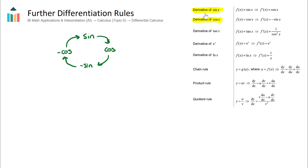It gets a little bit more difficult when we have, for example, the derivative of sine of 5x or cos of something that's not just x. For those cases, refer to your textbook, as we need to incorporate the chain rule. As a summary, sine and cos will go back and forth following this circle.